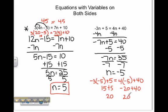4 times negative 5 is negative 20. Negative 20 plus 40 is 20. Since our two solutions are equal to each other, our solution of n equals negative 5 is correct.